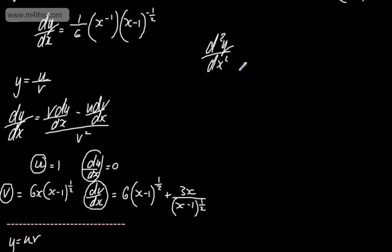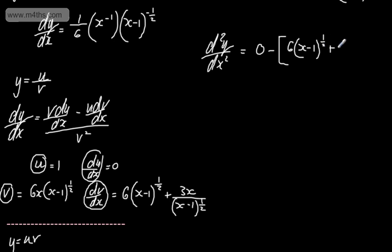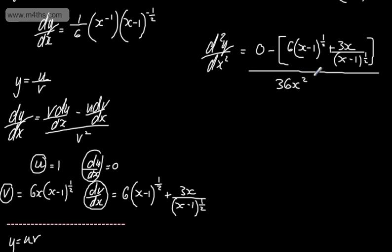Going back to d²y/dx² using the quotient rule: v·du/dx = 0, which is helpful. We subtract u times dv/dx, giving a numerator of minus [6(x minus 1) to the half plus 3x over (x minus 1) to the half]. The denominator is v squared = 36x squared times (x minus 1).